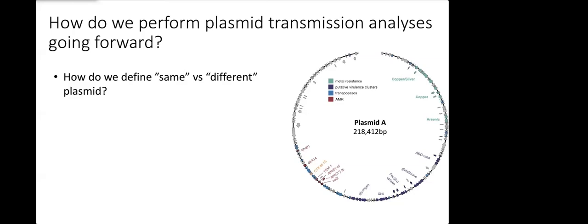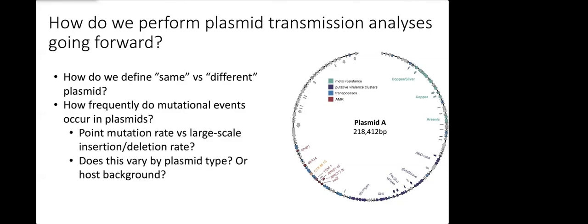I think one of the really key tricky things that plasmids cause when we're trying to understand this is having a better understanding of how frequently mutational events occur in plasmids. When we look at chromosomes and we look at point mutations, for many bacterial species now we have a pretty good understanding of how frequently we expect those point mutations to arise. I don't think we necessarily have that good of an understanding of how often we expect to see that in plasmids. How many point mutations between a pair of plasmids is enough to say this was a recent transmission event versus this happened a long time ago?